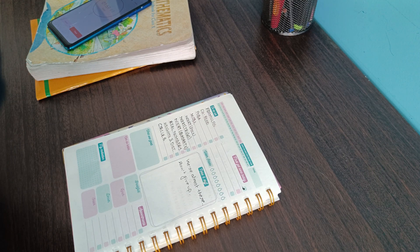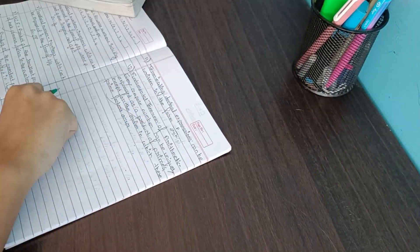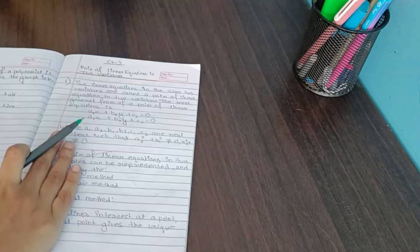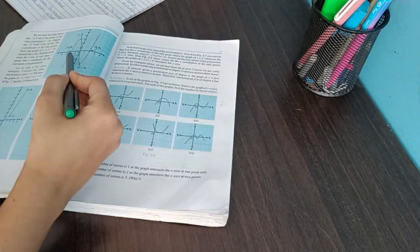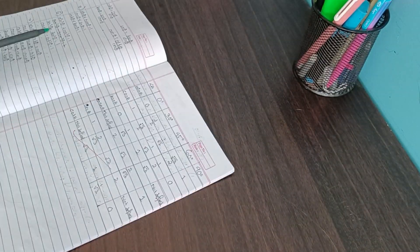Let's get started. So firstly, I decided to revise the formulas of all the chapters which I was supposed to read today, and also I read the theory of real numbers and polynomials, because sometimes they ask MCQs from the theory as well. Like from polynomials, I have seen multiple MCQs from the graphical method.